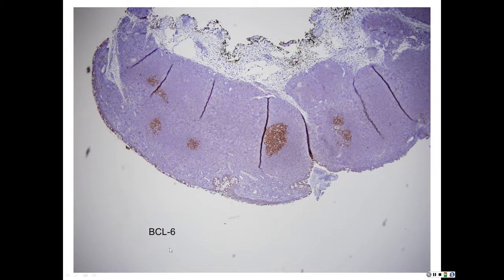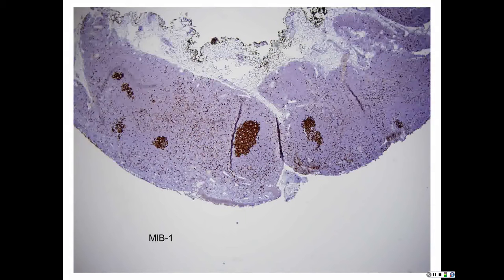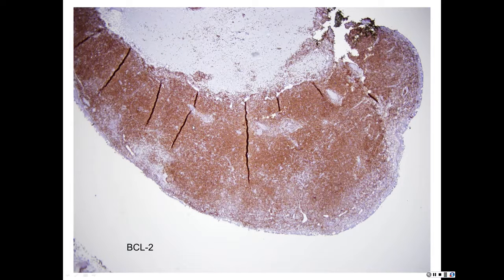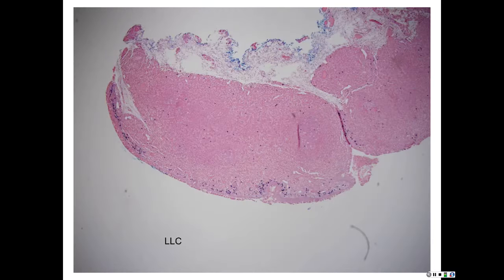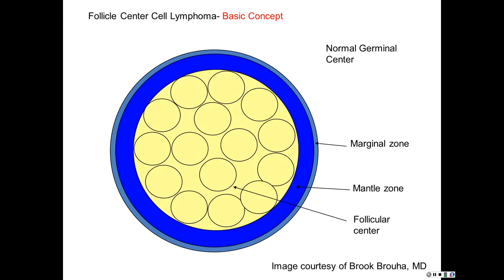If some of those numbers seem like alphabet soup, you just have to put it on a 3x5 card and do it every morning until you own it — which only takes about a week or so. MIB-1: those germinal centers look benign — strongly, solidly positive, like a benign germinal center. Your T cells will also be positive, which is most of what's positive out in the interstitial. BCL2 is positive because the normal marginal zone is positive. Kappa and lambda light chain — it's probably a little beyond a 2-to-1 ratio.